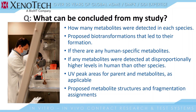What can be concluded from your study? You're going to know how many metabolites were detected in each species or matrix. We'll provide the proposed biotransformations that led to their formation. The key information most people are looking for is whether there are any human-specific or disproportionately higher level metabolites in human than any other species. We'll provide UV peak areas for the parent and metabolites, and we typically detect more metabolites by mass spec than with UV signal. You'll get a summation of all metabolites — both mass spec and UV — and proposed metabolite structures with fragmentation insets in the figures of your report.